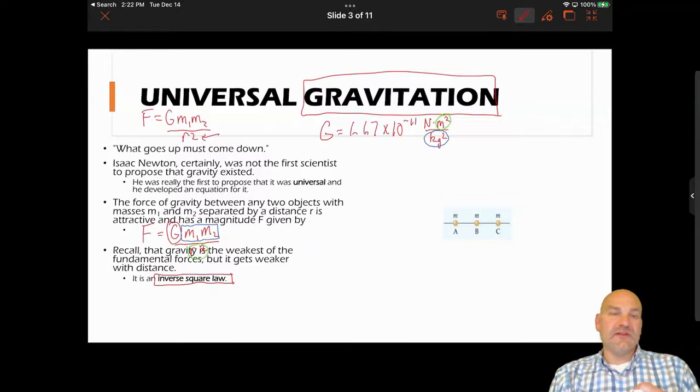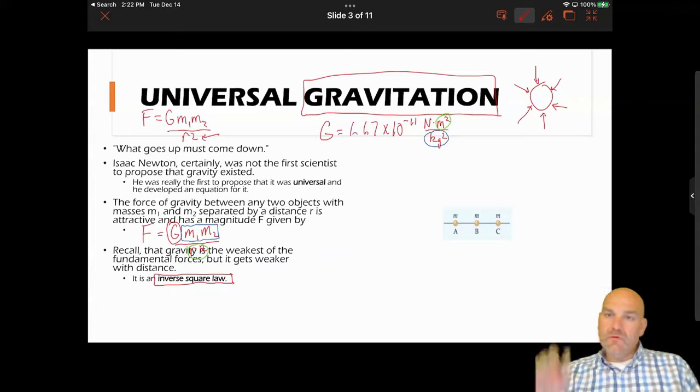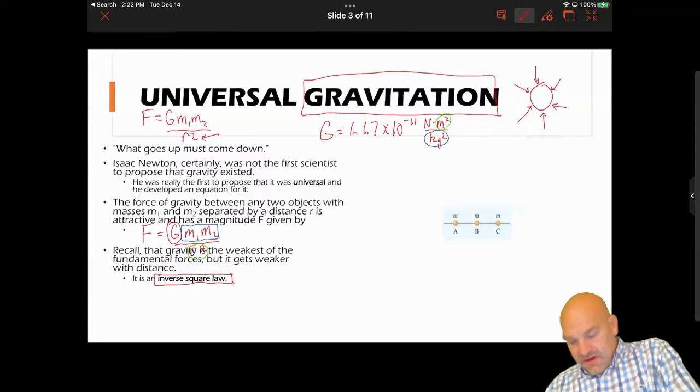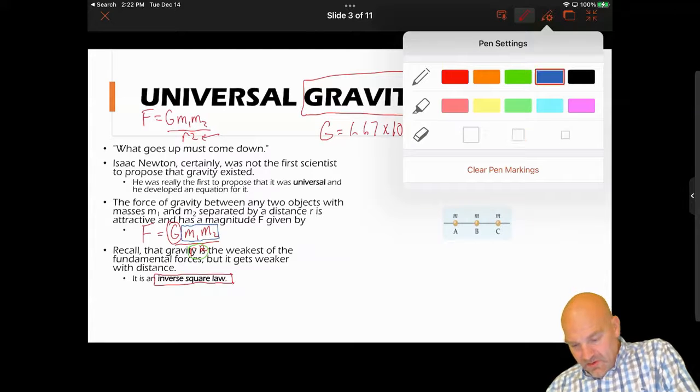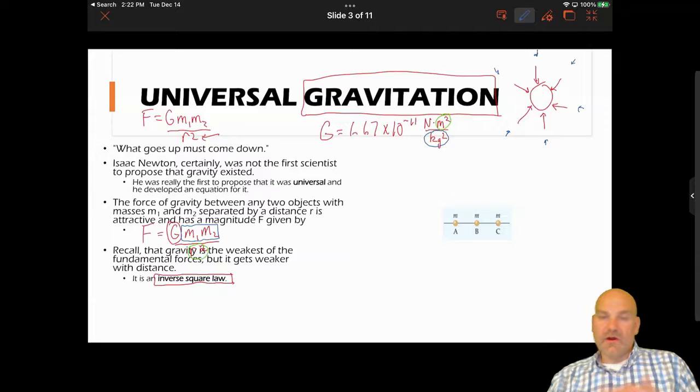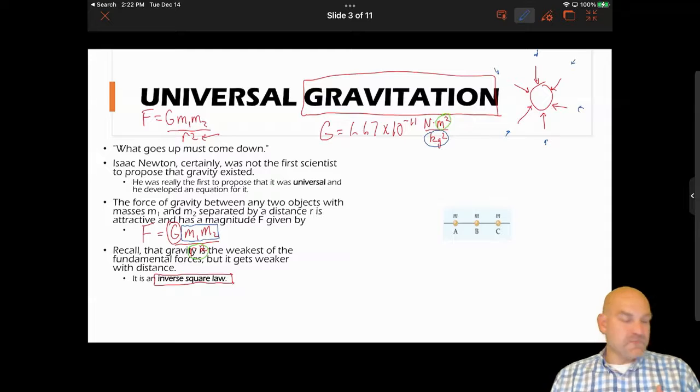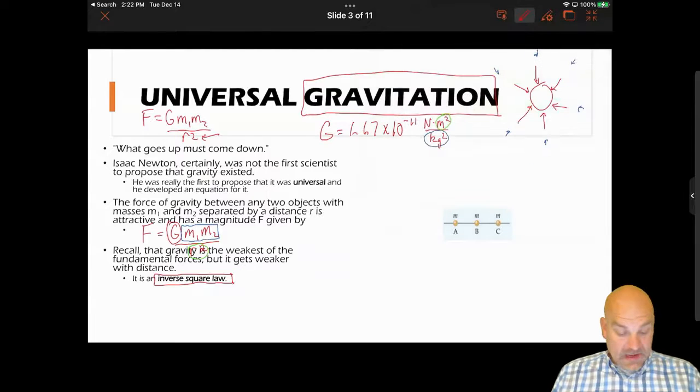In the previous slide we had our Earth and we had these vectors pointed at it, and they all will have the same value at that position. But if I go out a little bit further, my arrow is not going to be as big because of my r squared relationship. So all those blue arrows would have the same value, but it would be smaller than the red arrows.